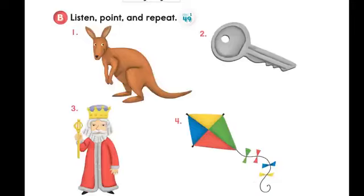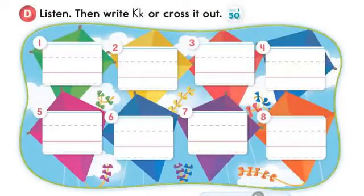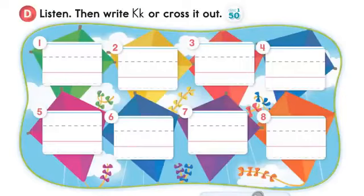Page 35. D. Listen, then write K or cross it out. One: juice, juice. Two: kite, kite. Three: kangaroo, kangaroo. Four: house, house. Five: key, key. Six: fork, fork.